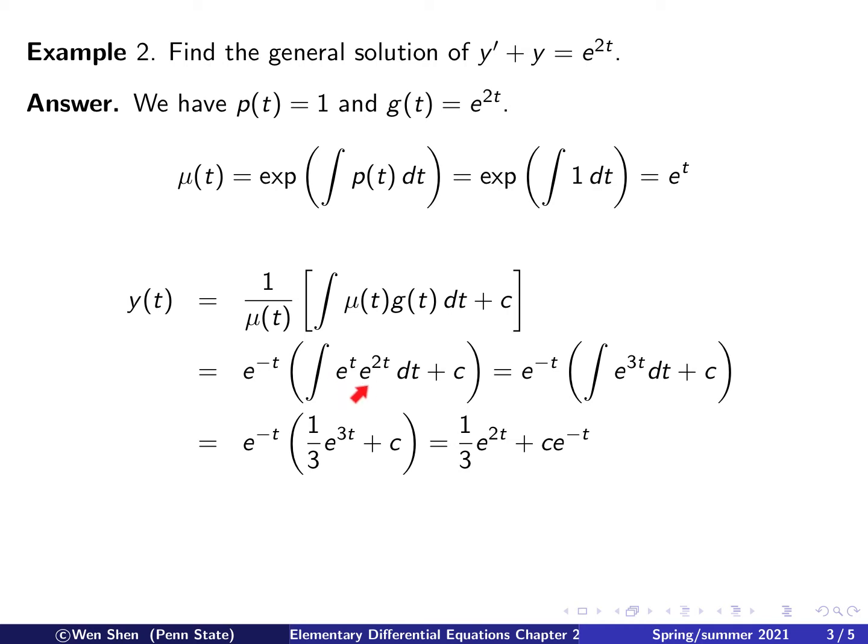Combine these two terms, I will get e to the 3t. Everything else remains the same. We need to integrate e to the 3t, which is 1 third e to the 3t plus a constant.